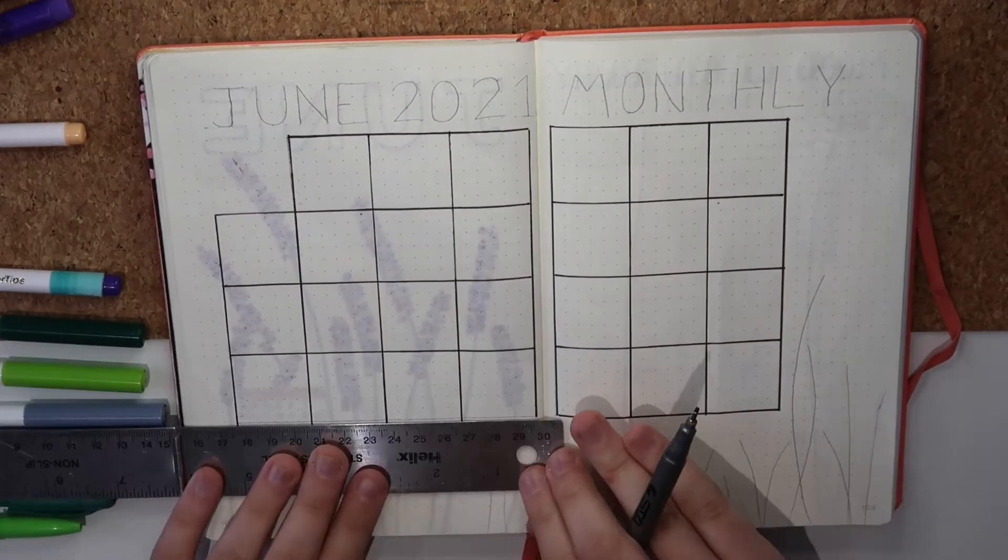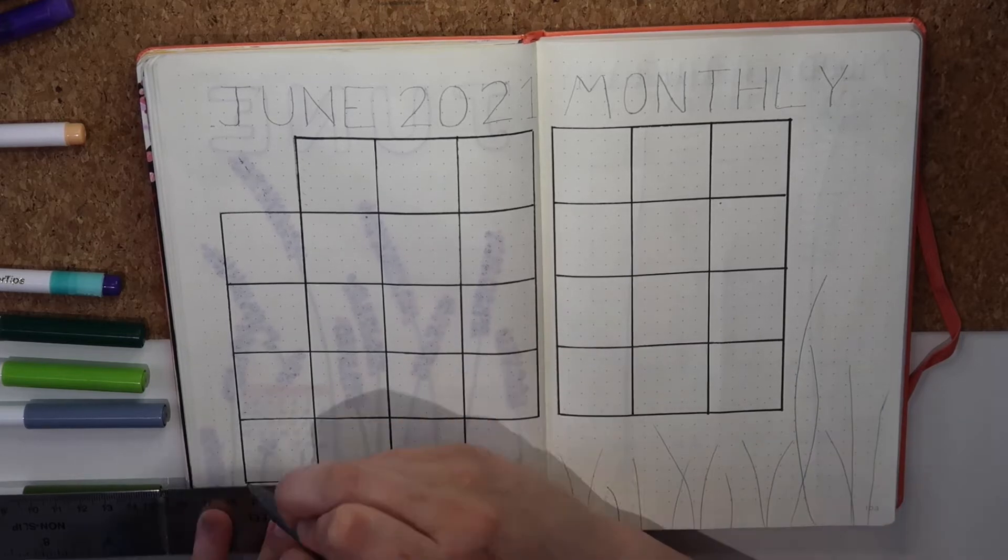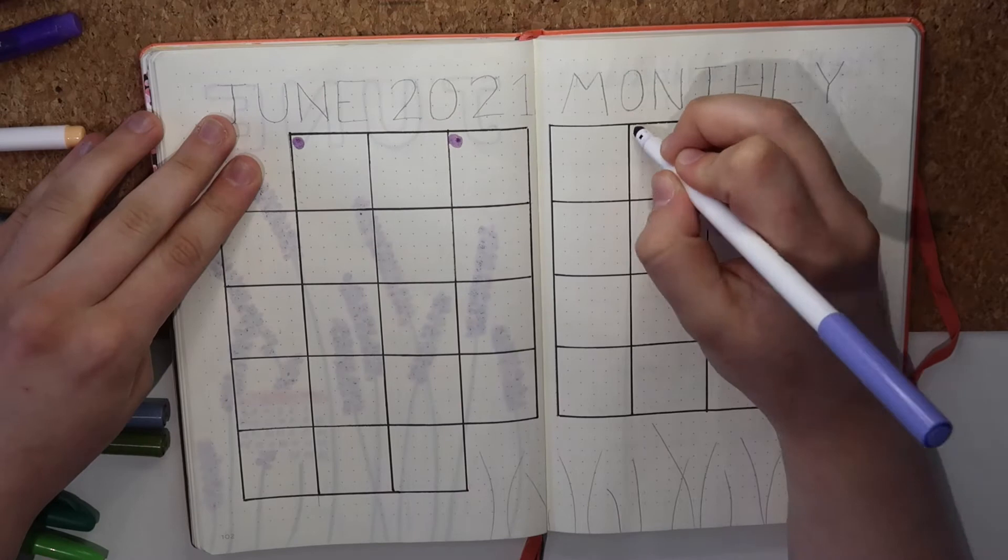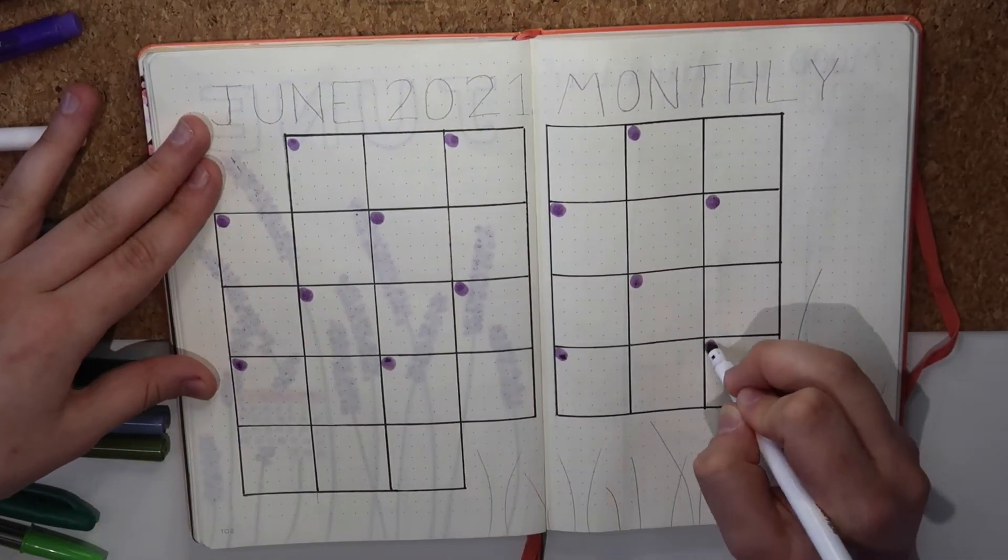Then to make the area where the day number is displayed more obvious, this month I've decided to just use a colorful circle using two of the shades of purple that I've been using on the lavender, which I do think also helps bring the theming a little bit more.